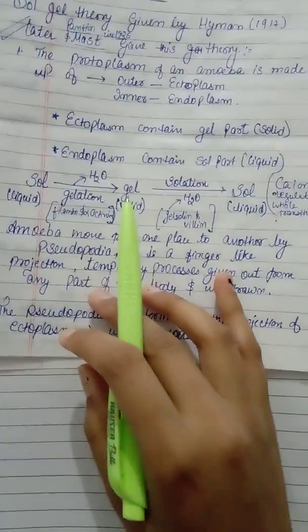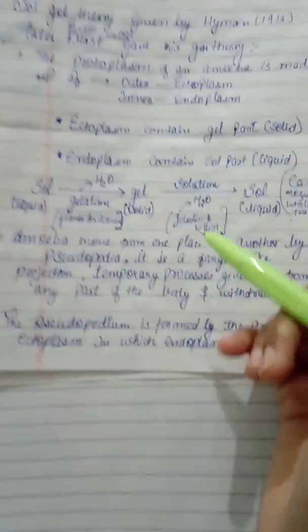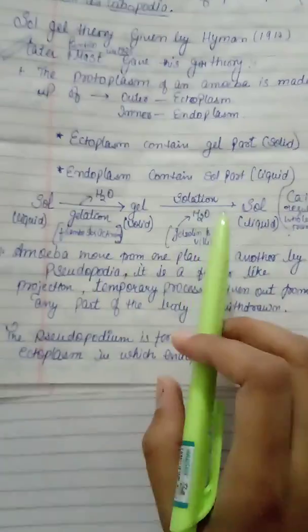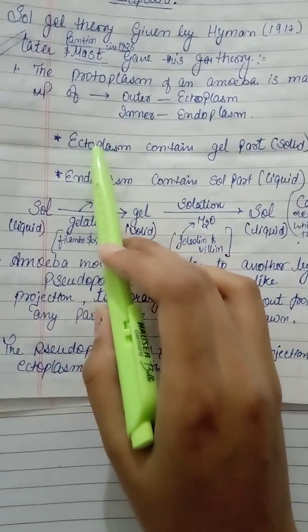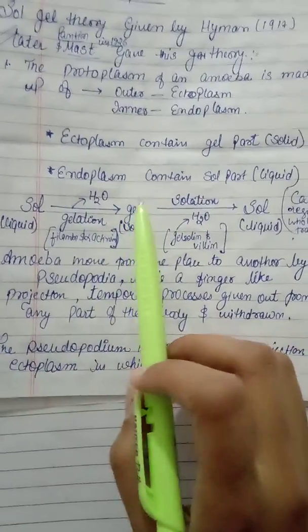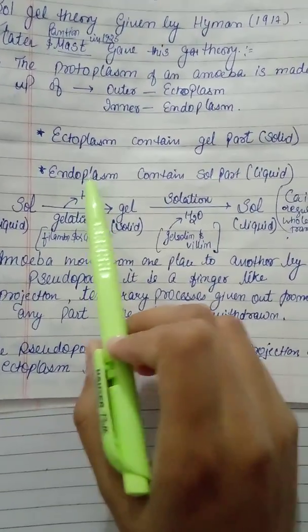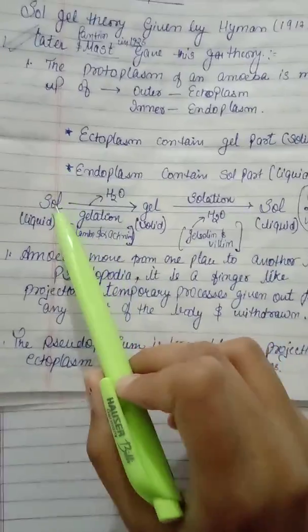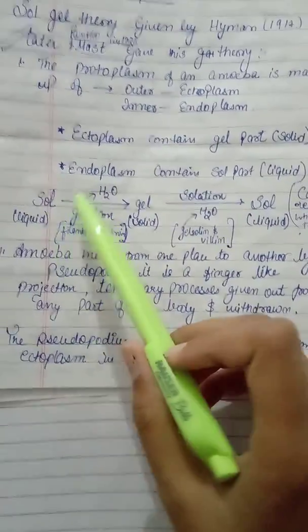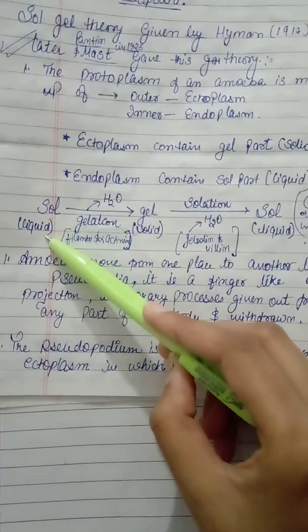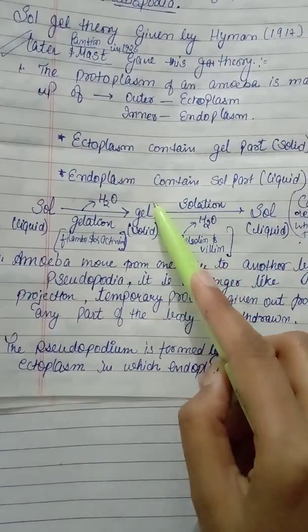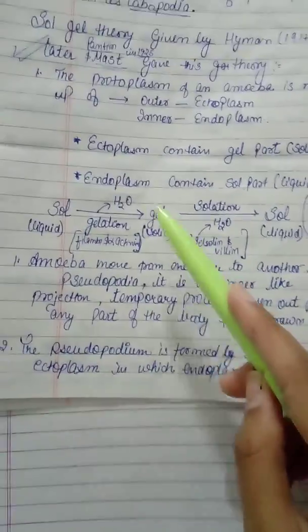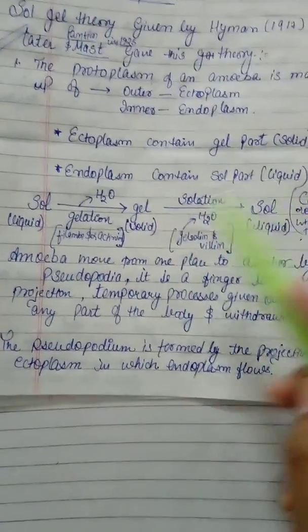In this theory, we see there are conversions. The formation of pseudopodia is because of these conversions. The sol will convert to gel and the gel will convert to sol, so there are two processes: gelation and solation. In the ectoplasm, the gel part will convert to the sol part. In the endoplasm, the sol part will convert to gel part — this liquid will convert to solid and this solid will convert to liquid. Sol is converted to gel by losing water, and gel is converted to sol by gaining water — this is solation.